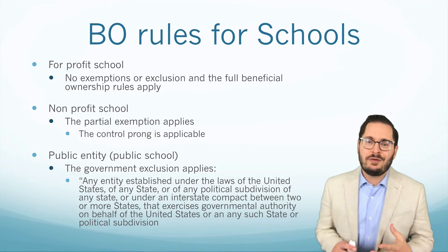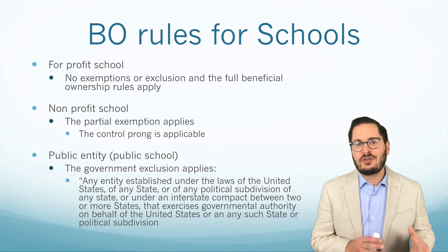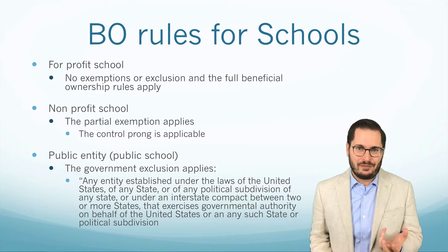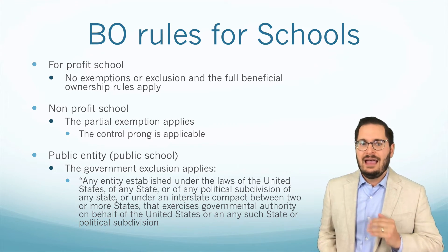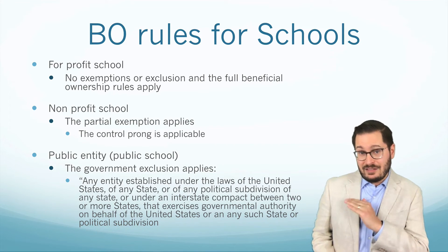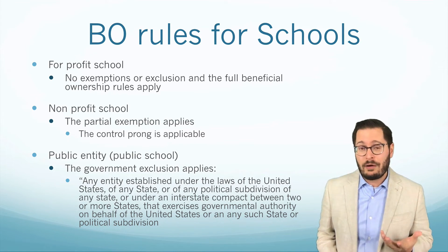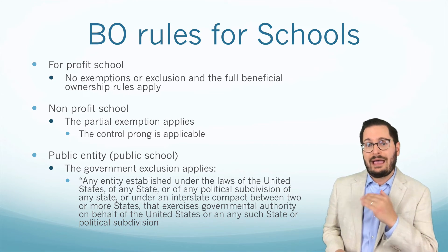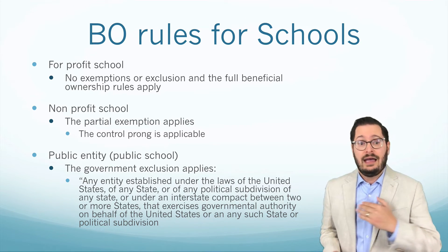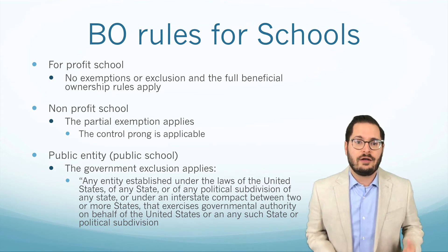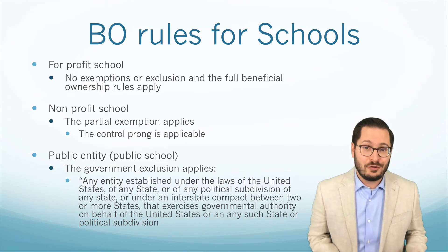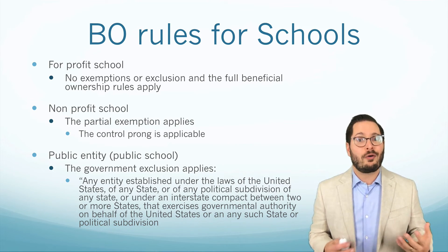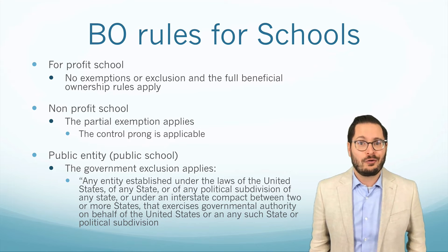When dealing with schools and beneficial ownership requirements, we have to understand what type of entity we're dealing with. Are we dealing with a for-profit entity or a non-profit entity? And if the non-profit is an unincorporated association, that would be different rules than for a non-profit corporation. And also, is it a public entity which would fall under the government exclusion? That is how we deal with schools and school corporations for beneficial ownership requirements.